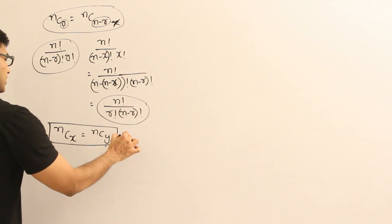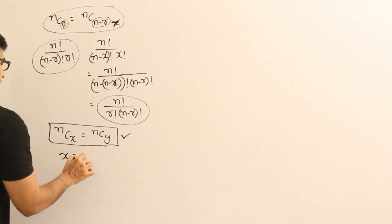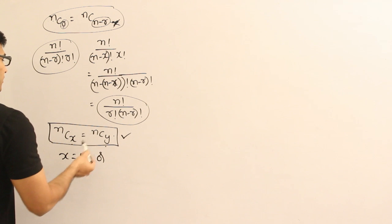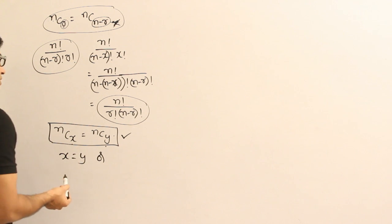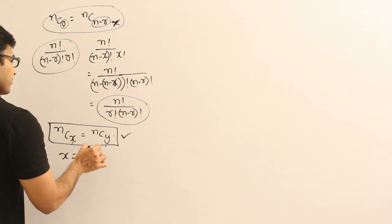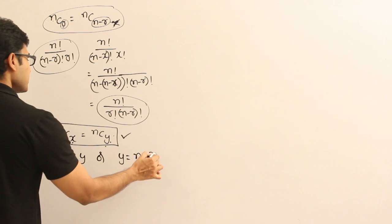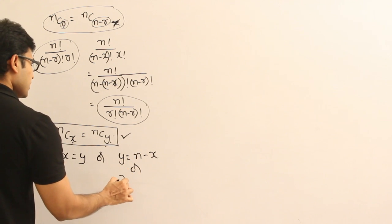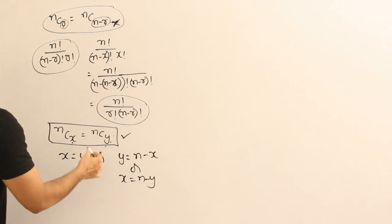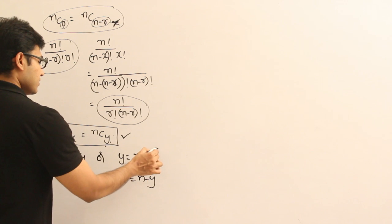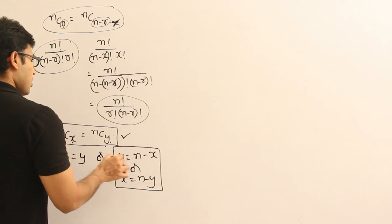So if this equation has to hold true, then either X should be equal to Y, or if X equal to Y then it is obviously true. Otherwise, what should happen is if you are having X here, there should be N-X. Then only both are going to be equal. Then in that case, Y is equal to N-X or X equal to N-Y. Anything is same. If you substitute anything, this entire thing holds true because of that formula. Therefore, the relationship between X and Y is either X is equal to Y or this one.